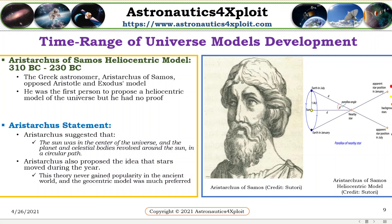Aristotelian suggested that the sun was in the center of the universe, and the planets and celestial bodies revolved around the sun in a circular path. Aristotelian also proposed the idea that stars moved during the year. This theory never gained popularity in the ancient world, and the geocentric model was much preferred.